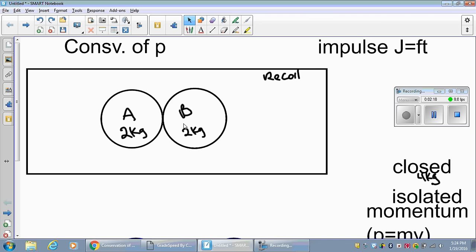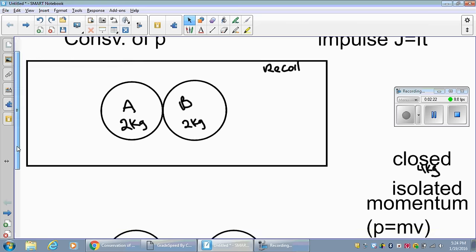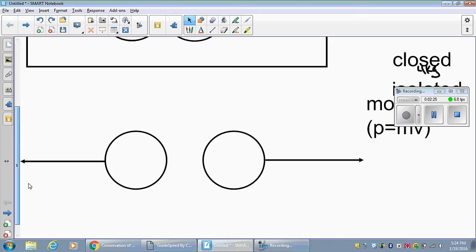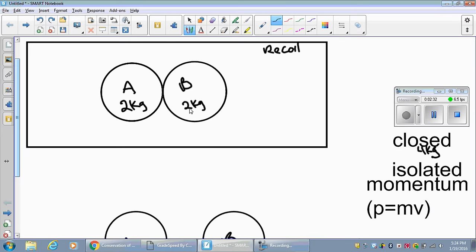Conservation of momentum means that whatever momentum I have before interaction, I have to have at the end of an interaction down here. This is A and B as well. So let's calculate that real quick. This right here has a momentum A and momentum B.